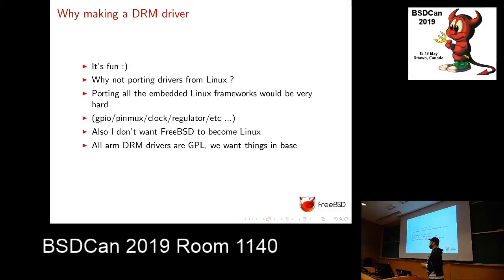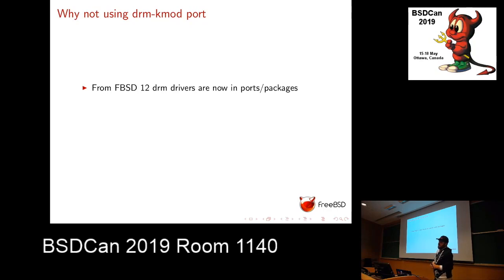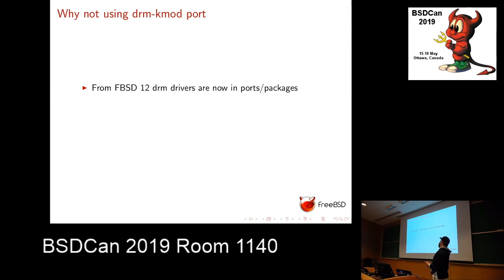I want people to just download the FreeBSD image, put it on the SD card, boot, and have HDMI output. And again, it's fun. For those who don't know, DRM drivers on x86 on FreeBSD — starting from FreeBSD 12 — are no longer in base. Everything is in ports and packages. It wouldn't be possible to import them in base right now because they still use a lot of GPL code directly copied from Linux. It's okay to put them in ports, but not to drop them in base.